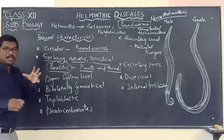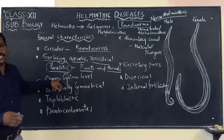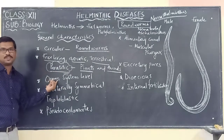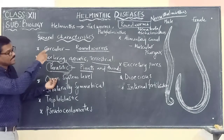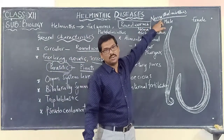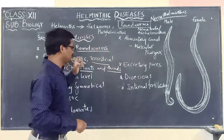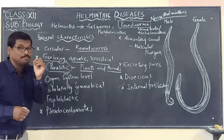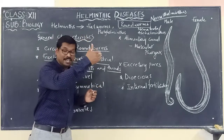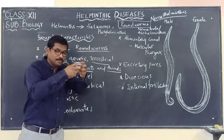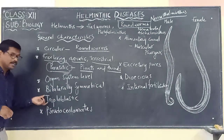If you are looking at their body organisation, they show organ system level of organisation — it is not cellular, not tissue level, but organ system level, which consists of cells, tissues, and organs. These organisms are also bilaterally symmetrical, which means they can be divided into two equal halves by passing through a central plane.